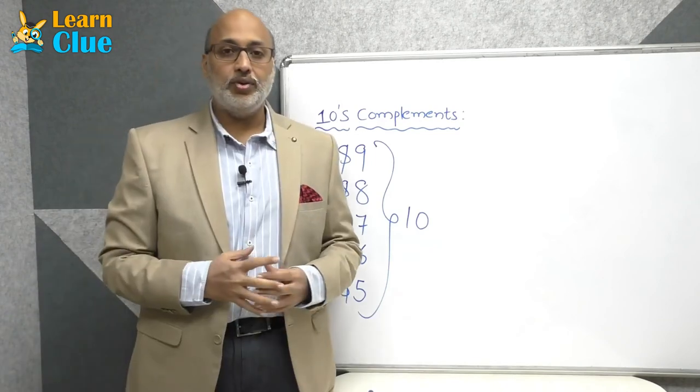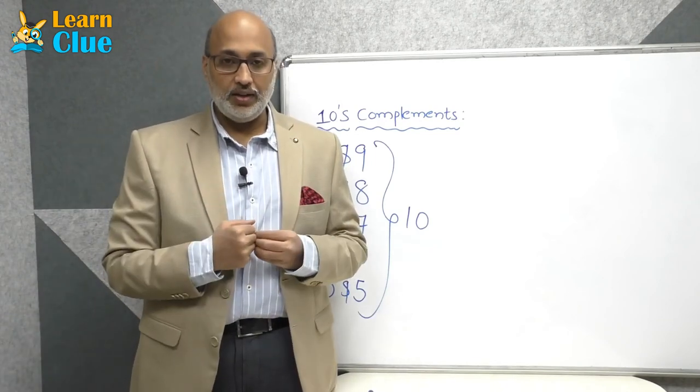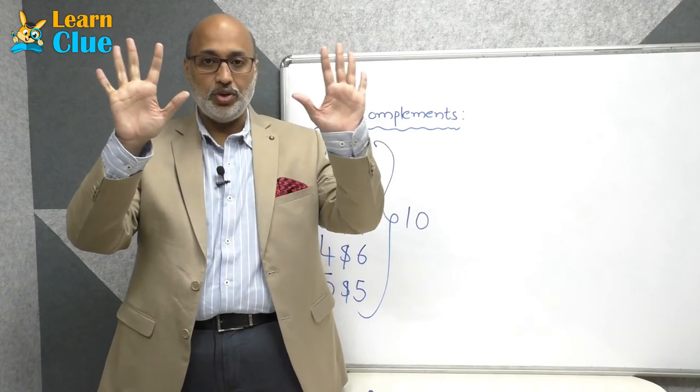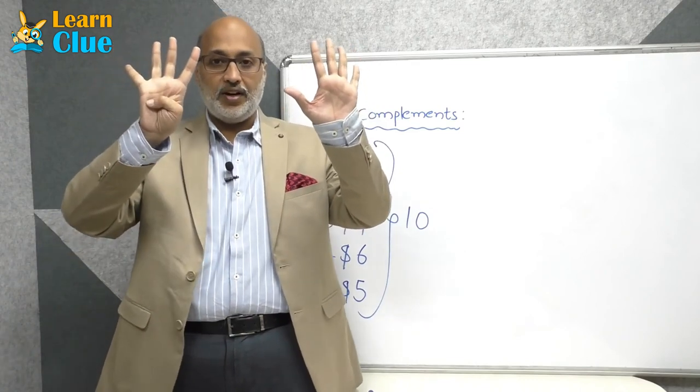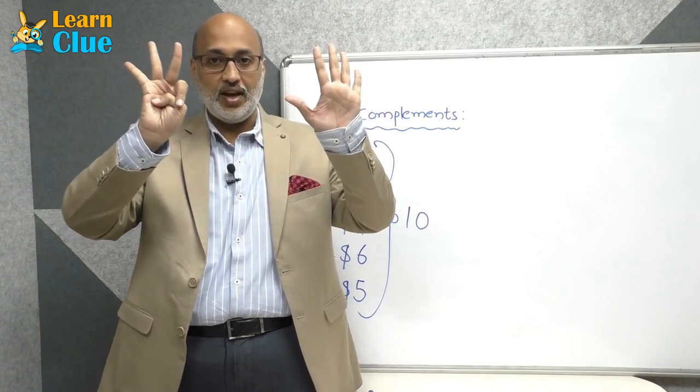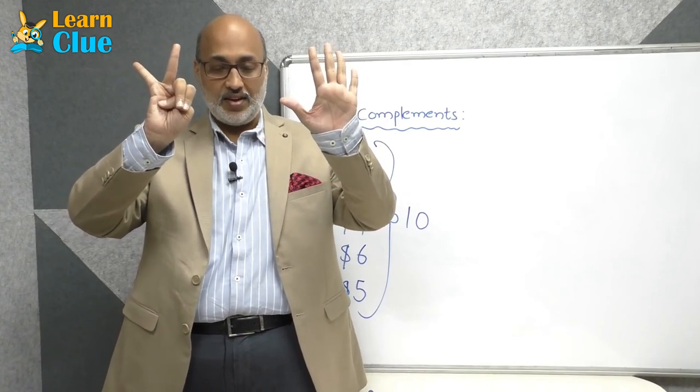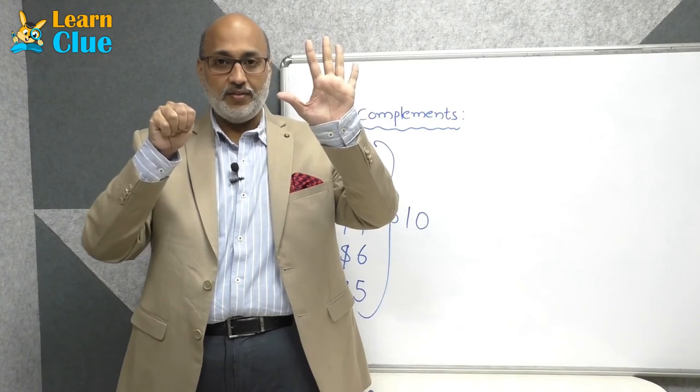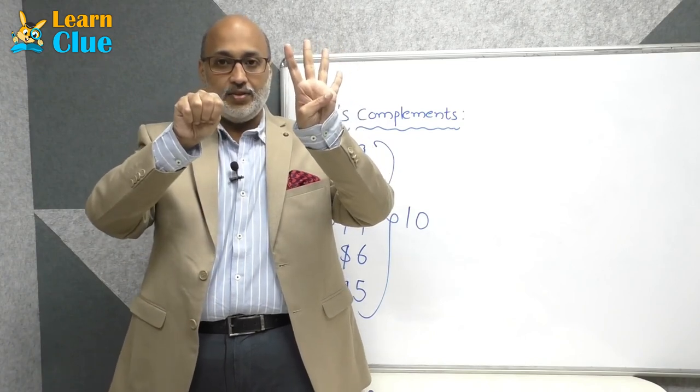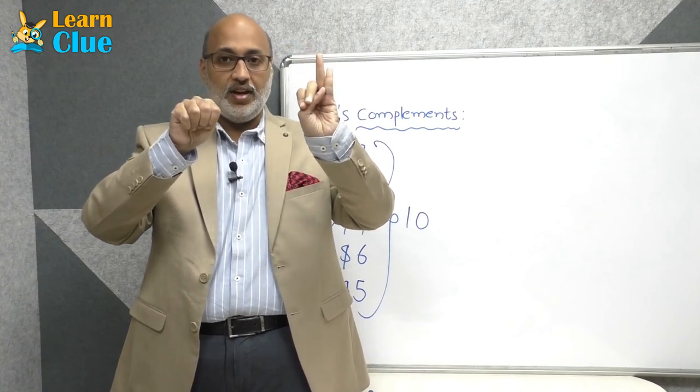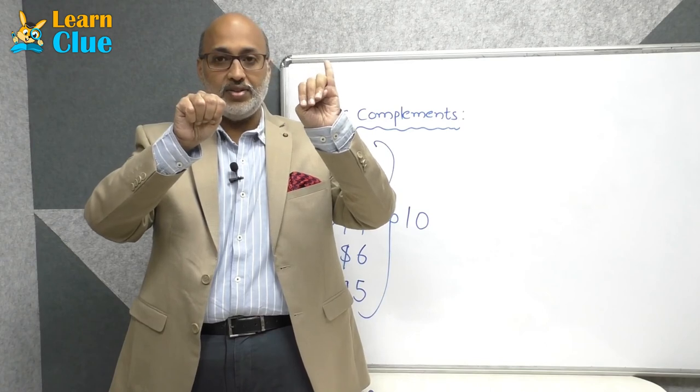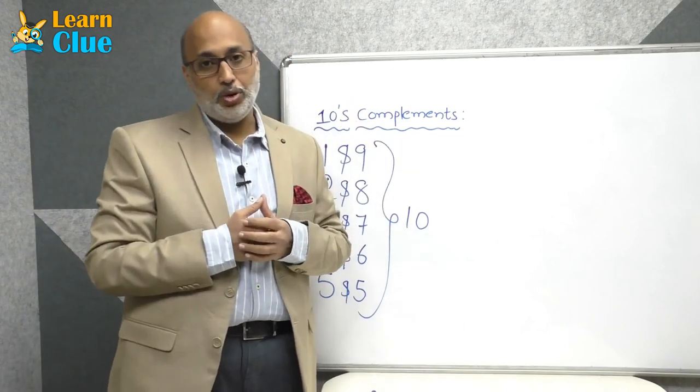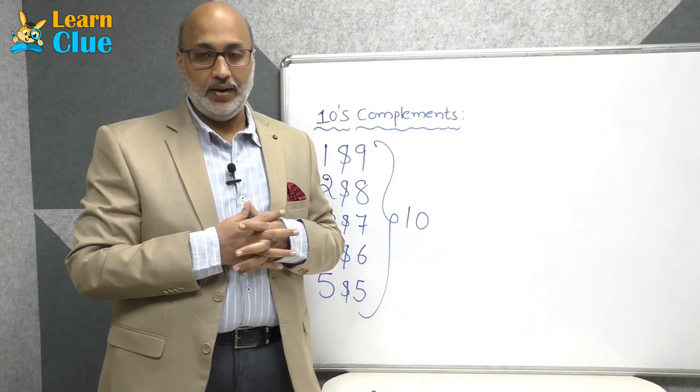Now we will learn a small technique or a fun activity to remember the friends group through your hands. One friend is nine, two friend is eight, three friend is seven, four friend is six, five friend is five, six friend is four, seven friend is three, eight friend is two, nine friend is one. If you remember this simple friends group through your fingers itself.